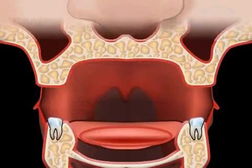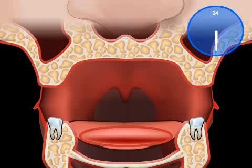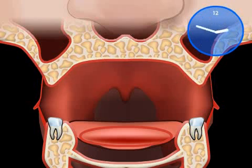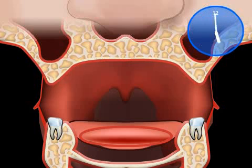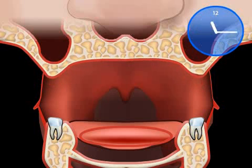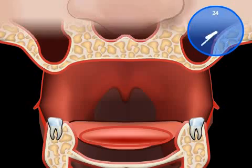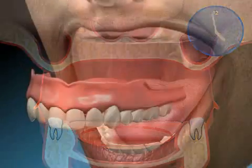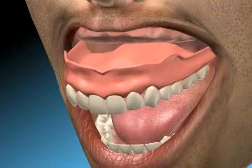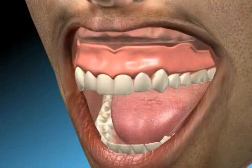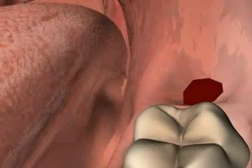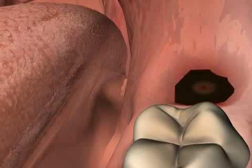How fast the bone regresses after the loss of a tooth differs in every person and depends on various factors. In some people it takes months, in others it can take years. Sometimes the bone regresses very quickly, especially in cases of ill-fitting prostheses and in cases of a rough extraction and associated injury to the tissue.